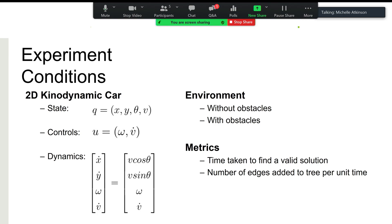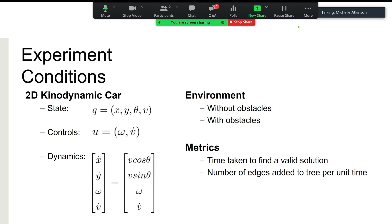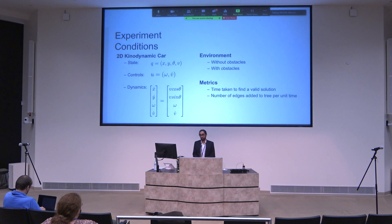To test this, we had a 2D autonomous car in an environment. We tested in two distinct environments: one with no obstacles and one with obstacles. We looked for two metrics: the time taken to find a valid collision-free path, and the number of edges added to the tree per unit time. The second metric gives a good idea of algorithm efficiency — if you can grow the tree faster per unit time, it usually leads to a valid path sooner.